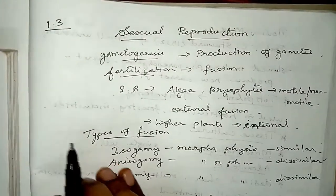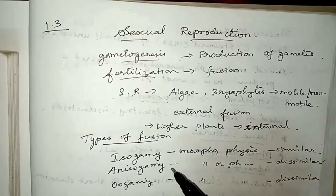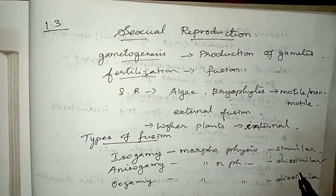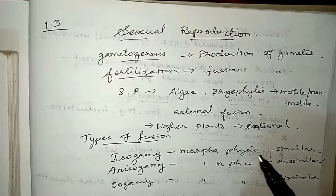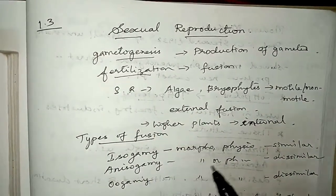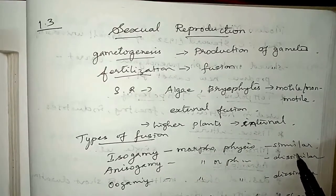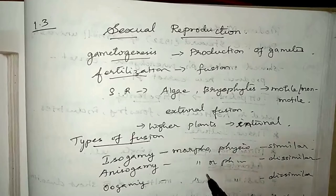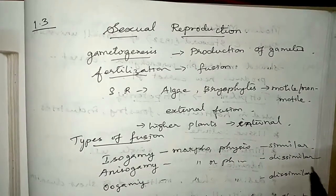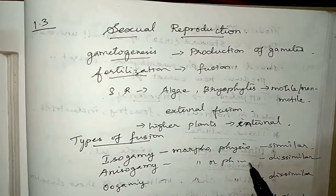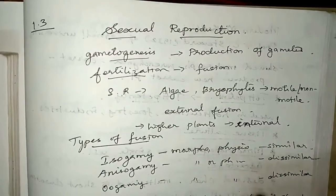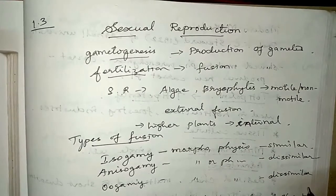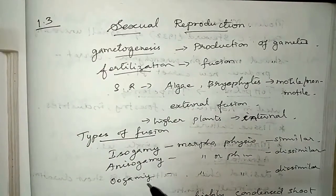There are three types of gamete fusion: isogamy, anisogamy, and oogamy. Isogamy is the fusion of gametes which are morphologically and physiologically similar. Anisogamy is the fusion of gametes which are either morphologically or physiologically dissimilar in only one way. Oogamy is the fusion of gametes which are morphologically as well as physiologically dissimilar. According to the type of species, any one of these will take place during sexual reproduction.